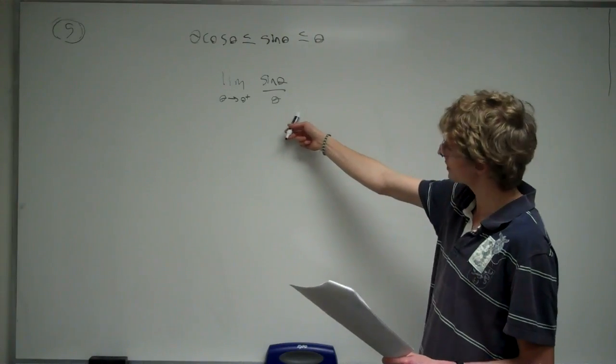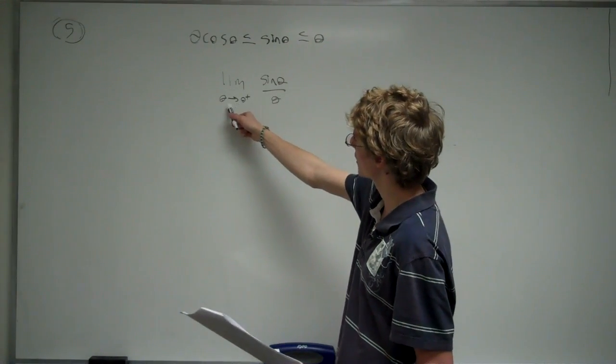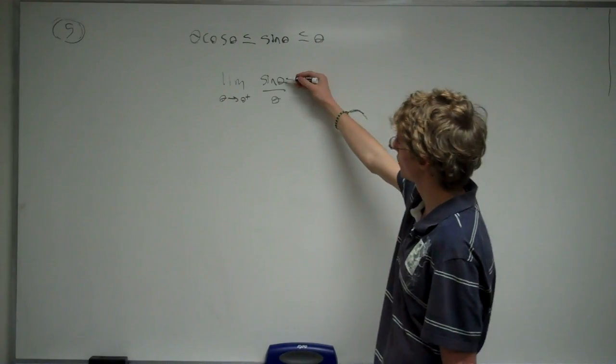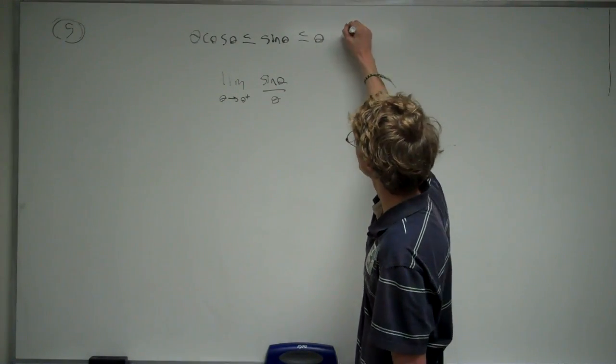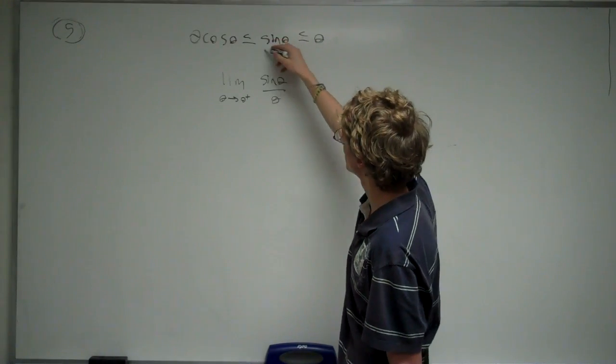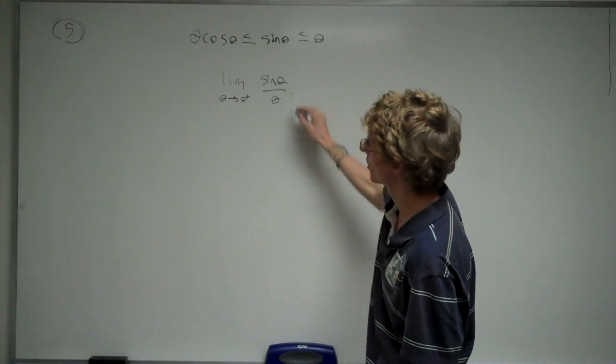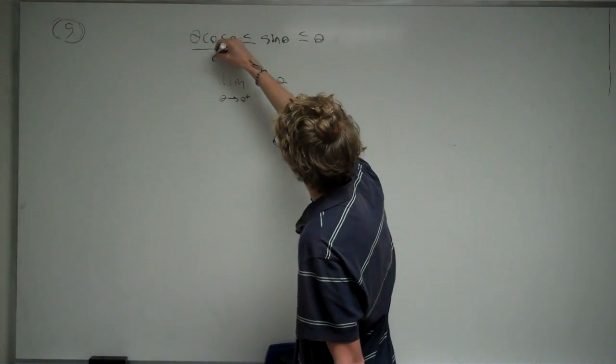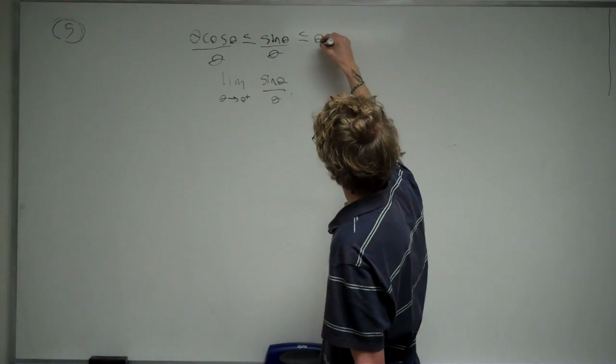Now, to find the limit as theta approaches 0 from the right of sine theta divided by theta using this inequality, we want to try to write this middle part in terms of this limit. To do that, we want to divide all the sides by theta.